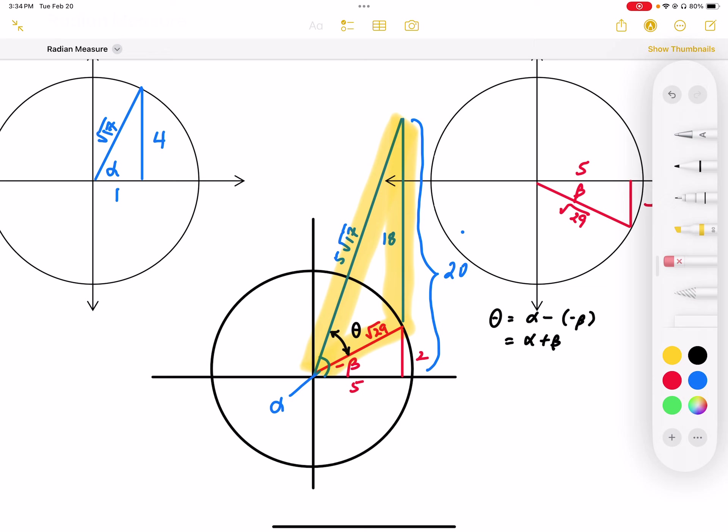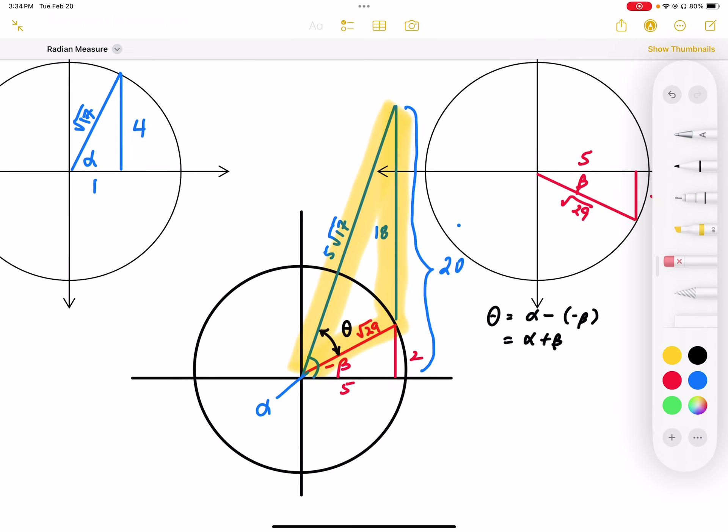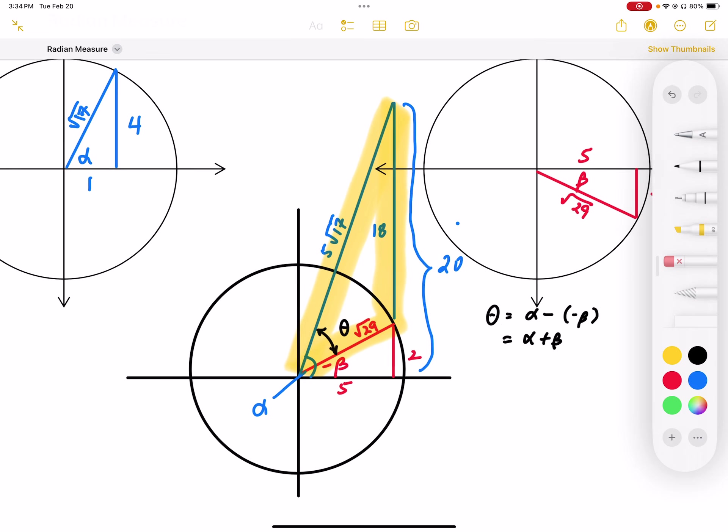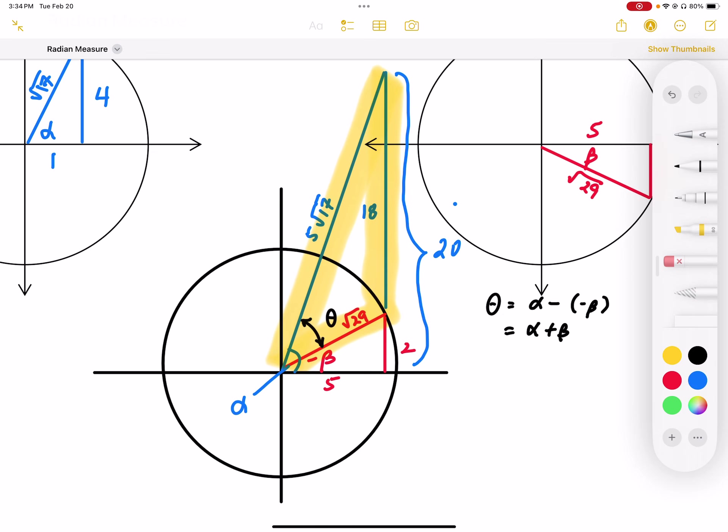Instead of having a length of one, I'm going to make it a length of five. That makes everything five times bigger. And that makes the vertical height, instead of four, now 20. The hypotenuse of that blue triangle is now going to be five root 17. And by doing that...